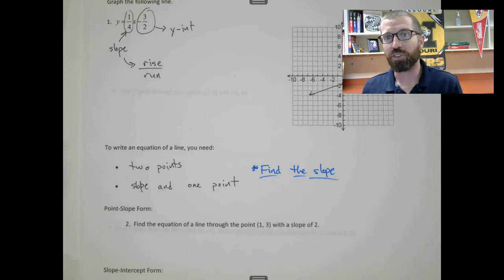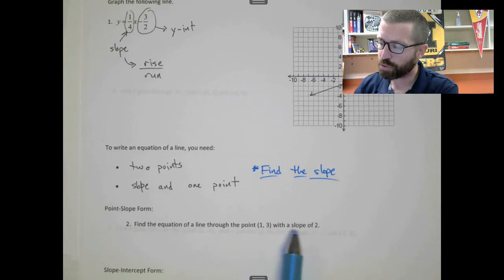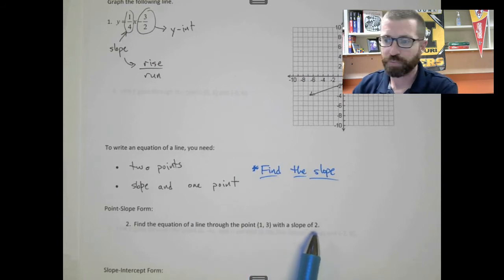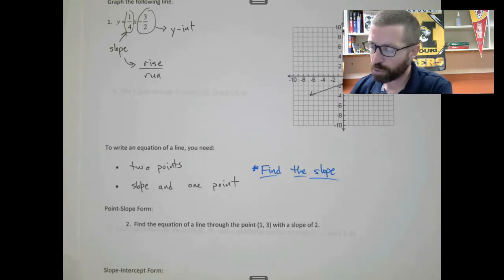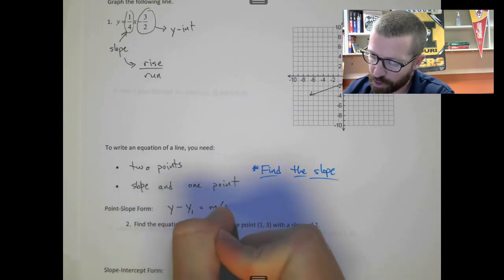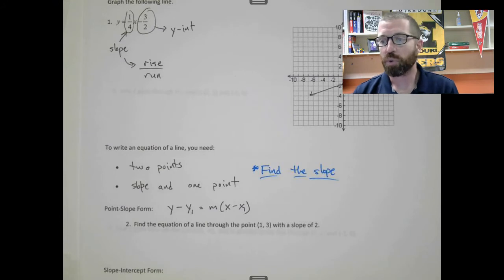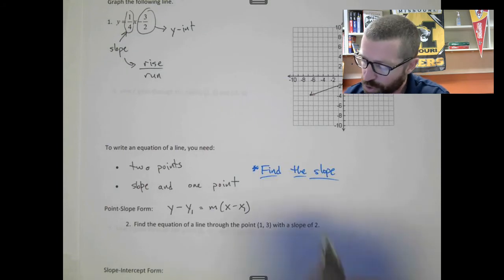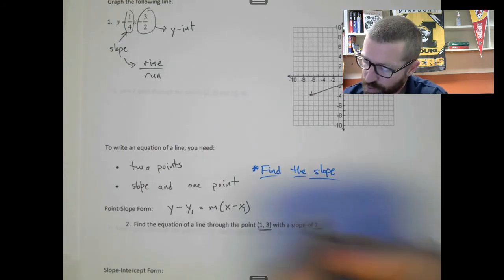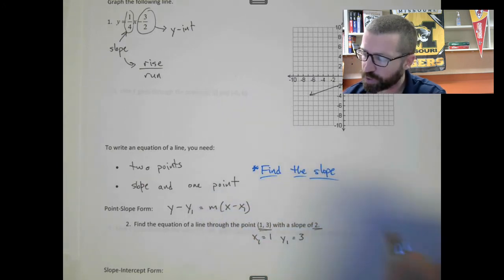Sometimes it's really easy because the slope is just identified — they tell you the slope. For instance, this question says: find the equation of a line through the point (1, 3) with a slope of 2. So the slope is 2. Point-slope form is y minus y1 equals m times (x minus x1). It's one of the more underrated forms. So here m = 2, x1 = 1, and y1 = 3.